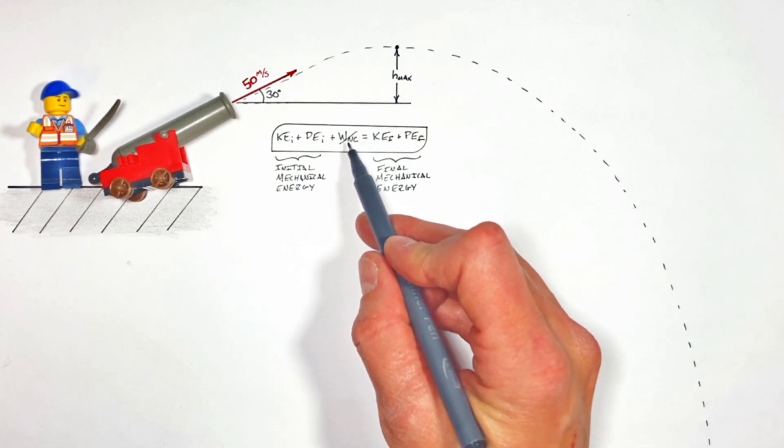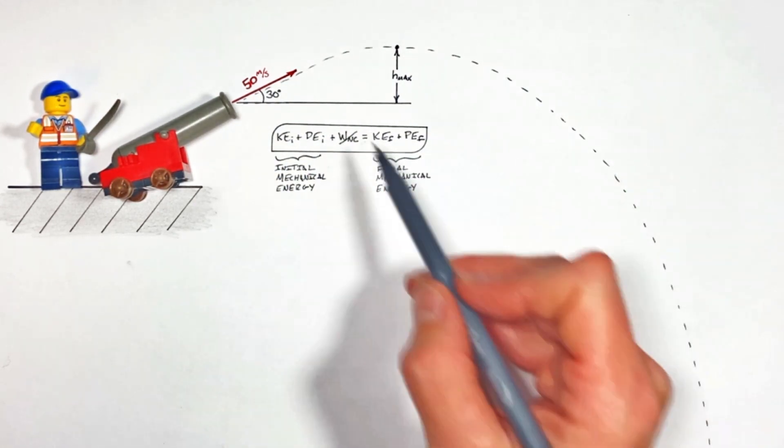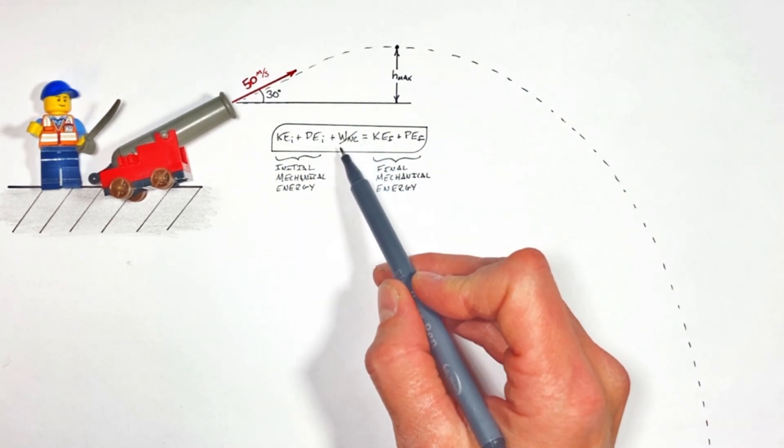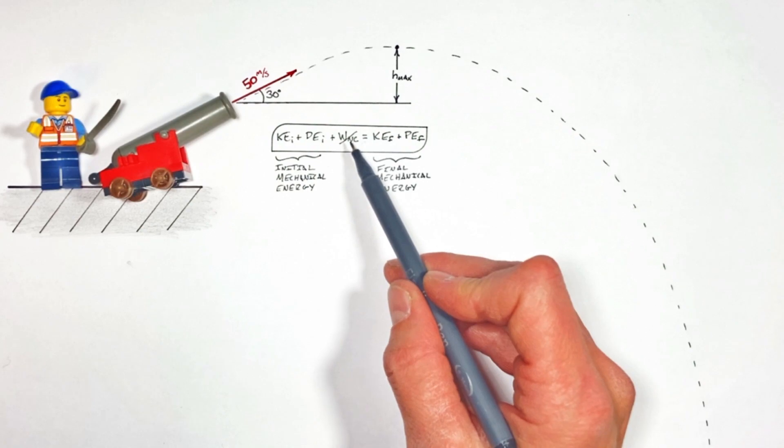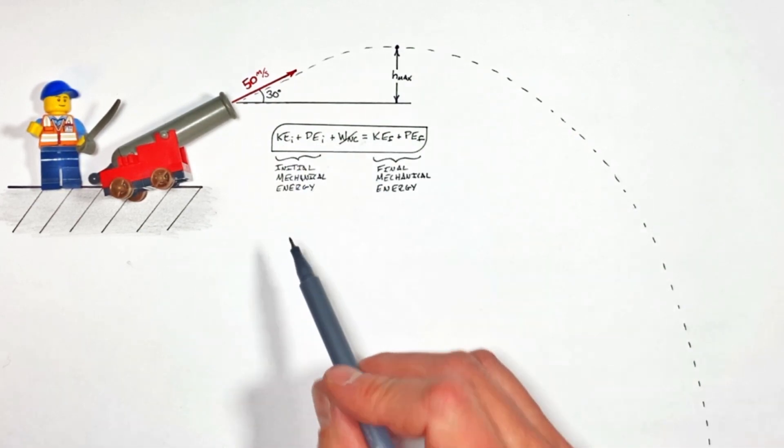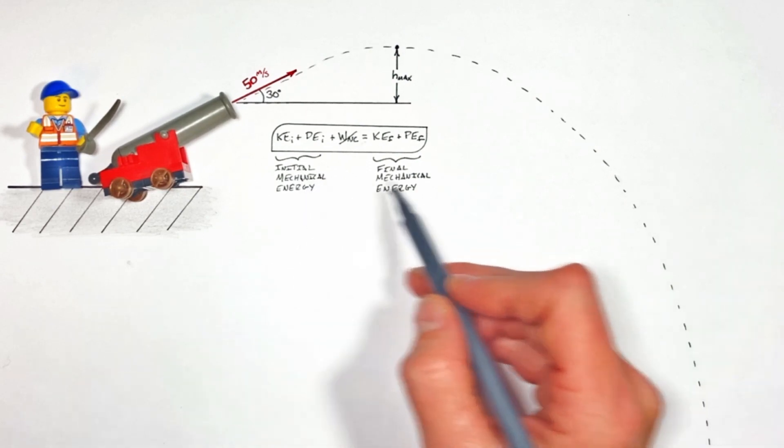The only thing acting on a projectile in projectile motion is gravity, which is a conservative force. It does no non-conservative work. Gravity just turns potential into kinetic energy, ultimately meaning that in a projectile motion problem, our initial mechanical energy is going to equal the final mechanical energy.